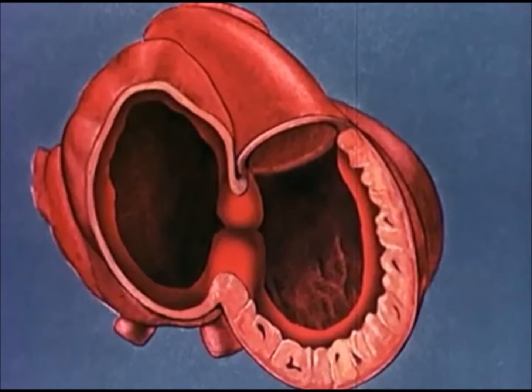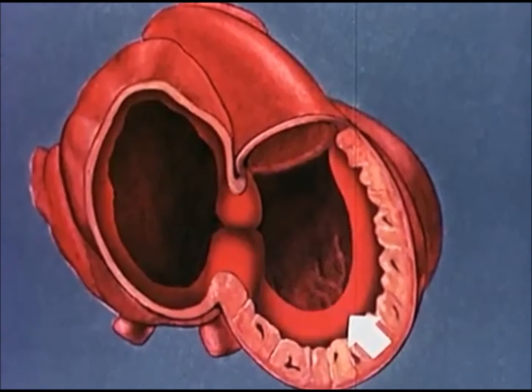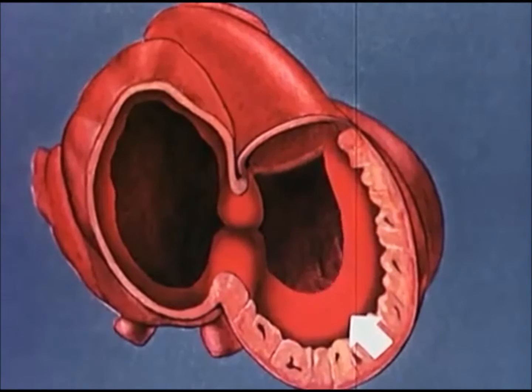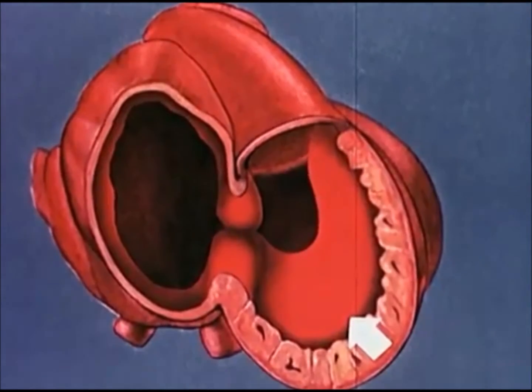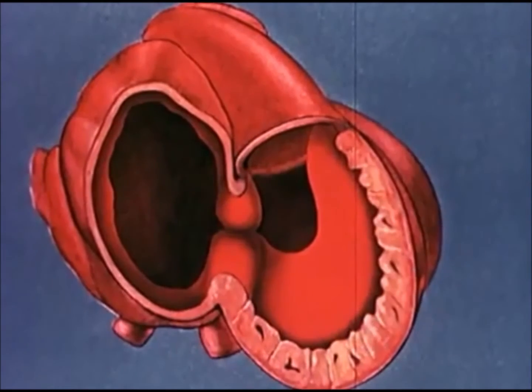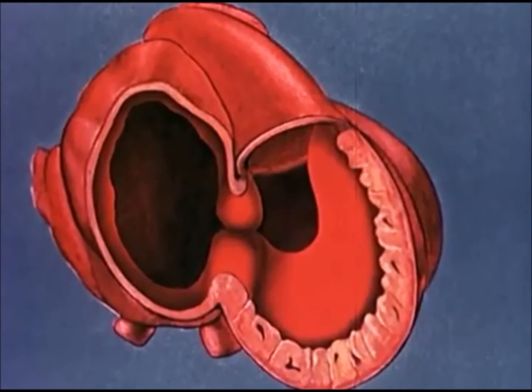From the interventricular ridge, a proliferating muscular septum advances across the common ventricle toward the base of the heart.